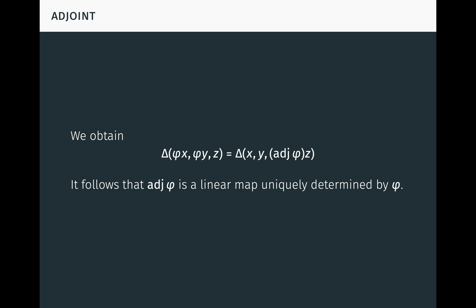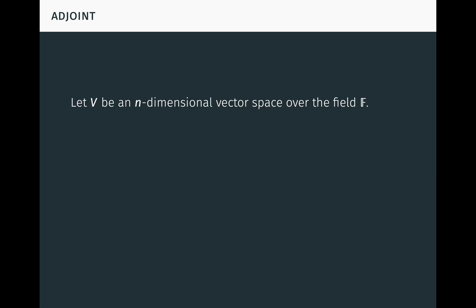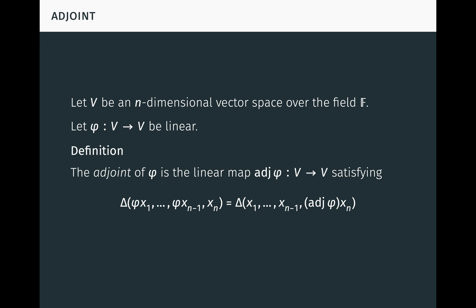Everything done in R3 generalizes. Let V be an n-dimensional vector space over F, and let phi be a linear transformation of V. The adjoint of phi is the linear transformation adj(phi) satisfying delta of (phi(x1),...,phi(x_{n-1}), x_n) equals delta of (x1,...,x_{n-1}, adj(phi)(x_n)) for all vectors x1 to xn. Notice how the n-1 phi's on the left-hand side become the single adj(phi) on the right-hand side — this property uniquely characterizes the adjoint. This adjoint should not be confused with the adjoint in an inner product space; it is sometimes called the classical adjoint, the adjugate, or the adjunct.